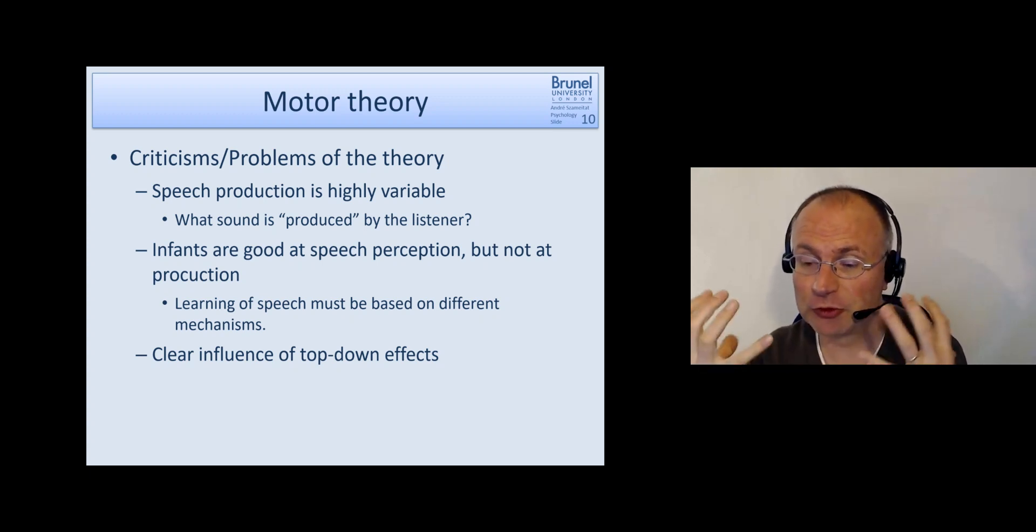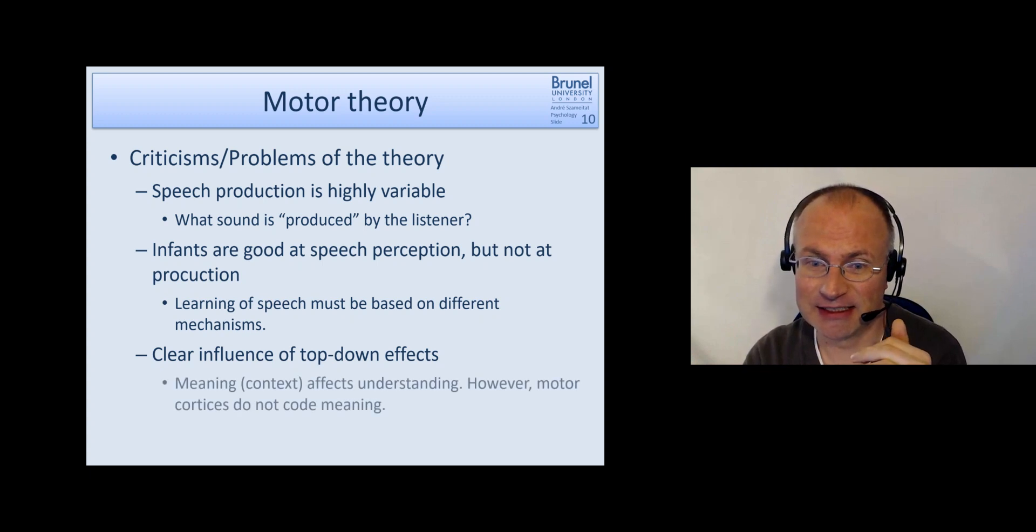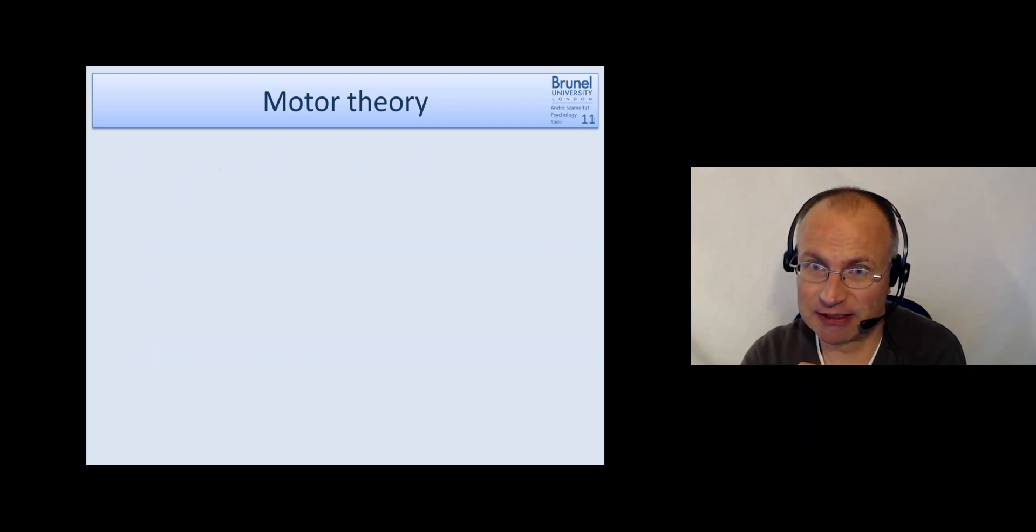And we have these clear influences of top-down effects, as we discussed before, like the phonemic restoration effect, which really works on the level of phoneme. So very low level, but still it's highly influenced. So we can say that meaning or the context affects understanding. However, motor cortices themselves do not code meaning. They are really about movement, action and things like that.